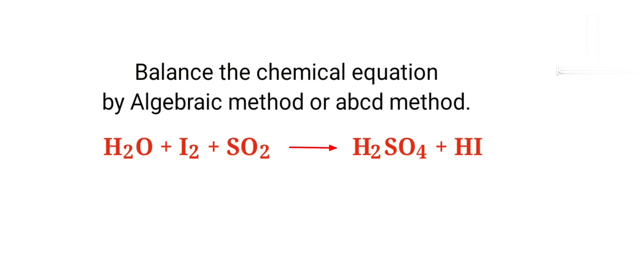Balance the chemical equation by algebraic method or ABCD method. Water plus iodine plus sulfur dioxide gives us sulfuric acid plus hydrogen iodide.